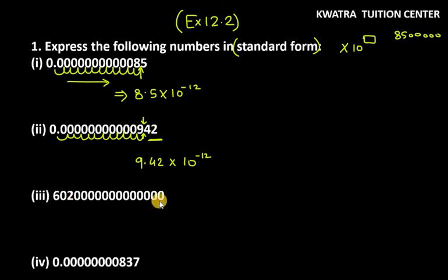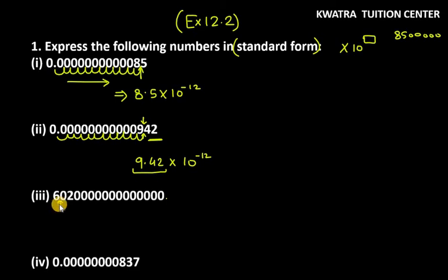For the third one, you can see it is a very large number — 60200... So here, a positive exponent will come. Let's see where to move from. We have to start from the right side to the left side. We stop where the number should look like a single digit followed by a point. Here we have 602, so we have to stop after 6. Actually, after 0 — let's count from the right side.